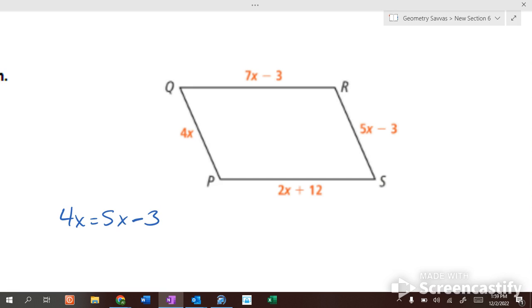What do we do to each side? We could subtract 4x. I'm going to take a shortcut. I'm going to subtract 5x. So I go negative x equals negative 3. If negative x equals negative 3, what does a positive x equal? Positive 3. So x is 3, so that's 12. 5 times 3 is 15 minus 3 is 12. That's 12. Makes sense.